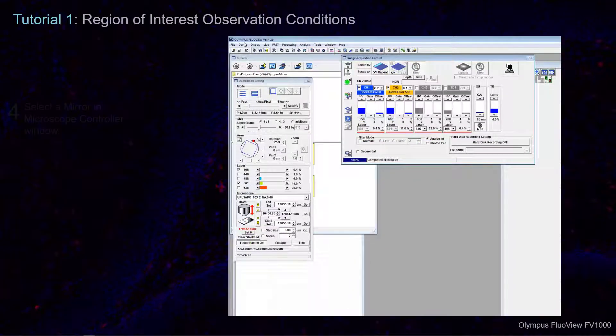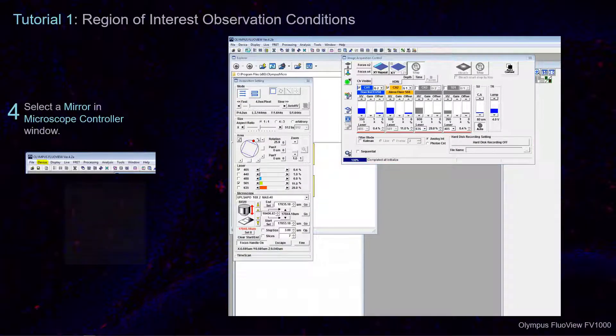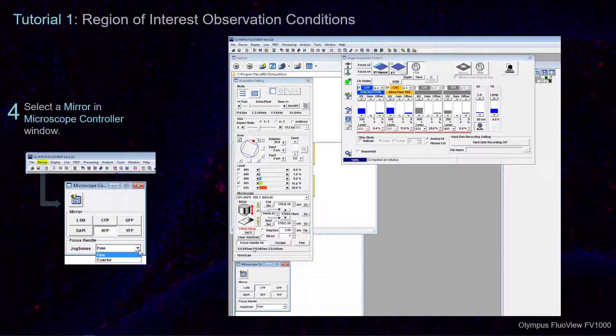At the top of the main Flowview screen, navigate to the Device tab and open the microscope controller window. Select the mirror most appropriate to see your counterstain.